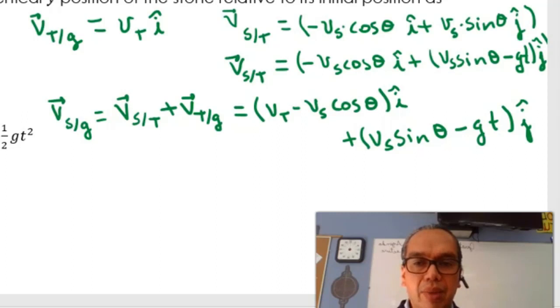theta times t. But the position y should be equal to initial velocity vs sine of theta times t minus one half gt squared. And that is option D.